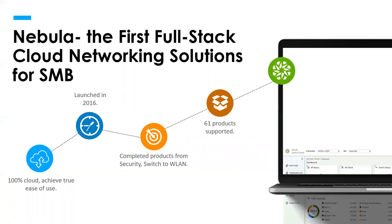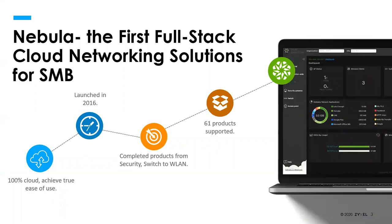So to begin with, we'll start with what is Nebula. Nebula was the first full stack cloud networking solution for SMB. You may remember at the time it used to only be Meraki, and I want to say Arrowhive, who were primarily focused only on the enterprise market. So we decided we wanted to take that sort of functionality and feature set and bring it into something more aimed at the SMB space. We did this all the way back in 2016, so this will be our fifth year of offering Nebula services. We currently support the ability to manage 61 different products.